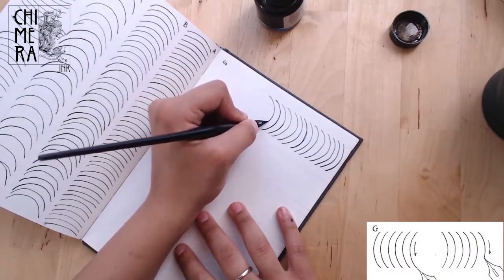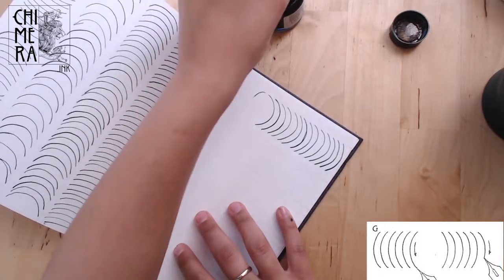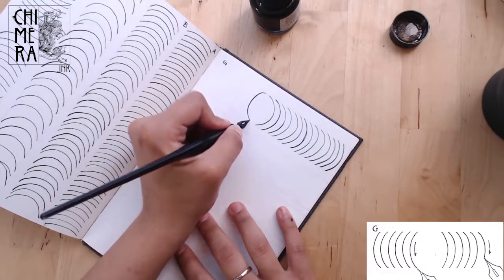G is curved practice, but horizontally, similar to C. So keep half of it to the right, half of it to the left.